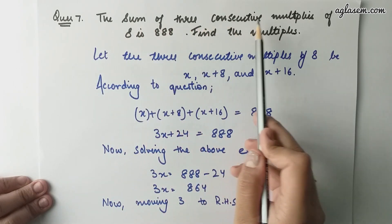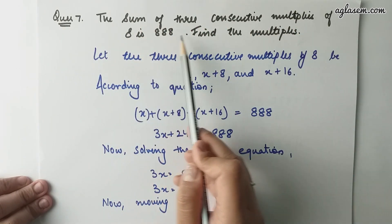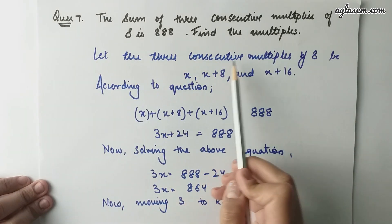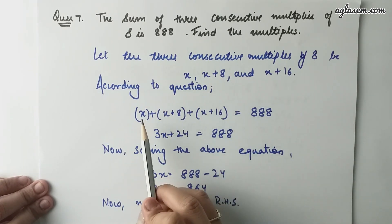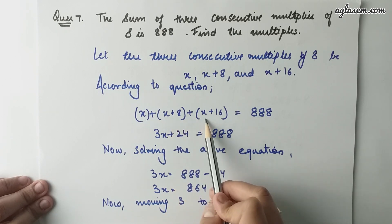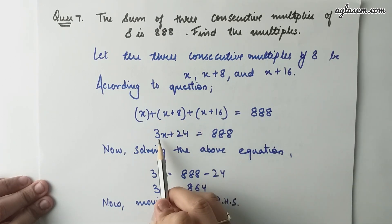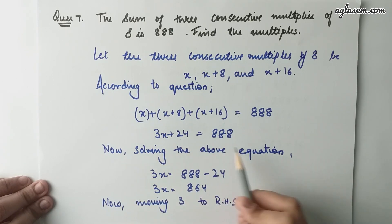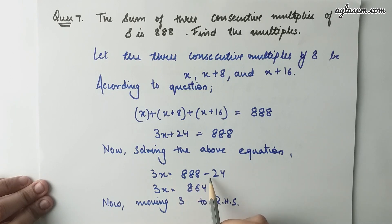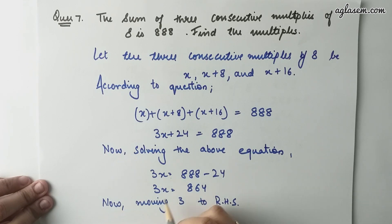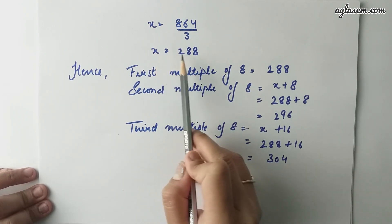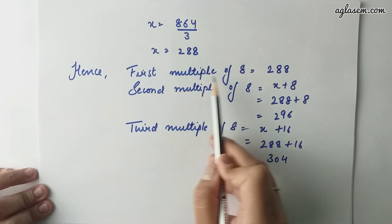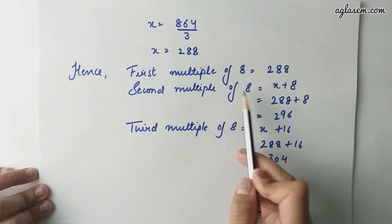Question number 7: The sum of three consecutive multiples of 8 is 888. Find the multiples. Let the three consecutive multiples be x, x plus 8, and x plus 16. According to the question, x plus x plus 8 plus x plus 16 equals to 888, giving 3x plus 24 equals to 888. Solving, we get 3x equals to 864, so x equals to 288. Hence, the first multiple of 8 is 288, and the second multiple of 8 is 296, and the third is 304.